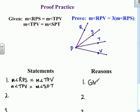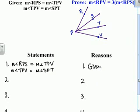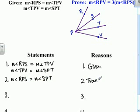So I see a transitive property coming on. If RPS is equal to TPV and TPV is congruent to SPT, then we all know that angle RPS must be equal to the measure of angle SPT. That is the ever popular transitive property.